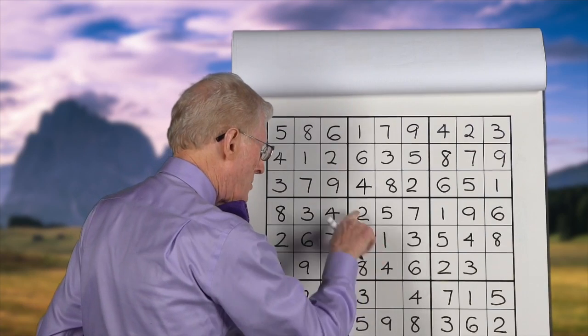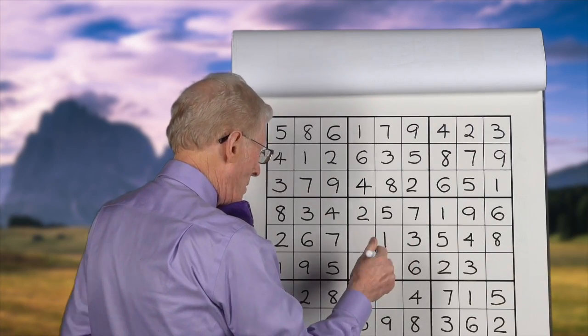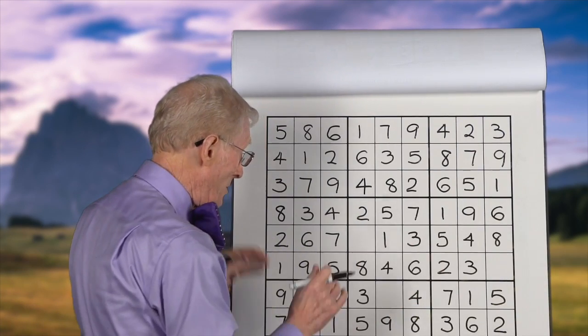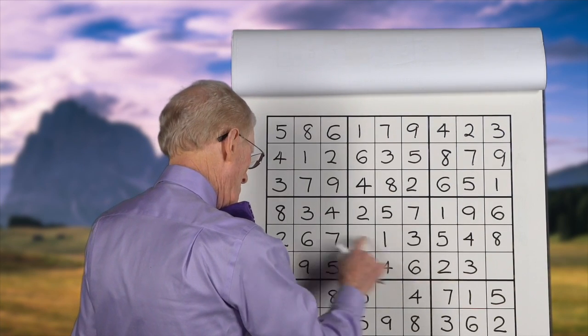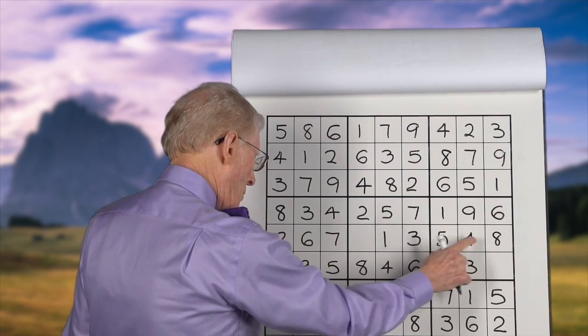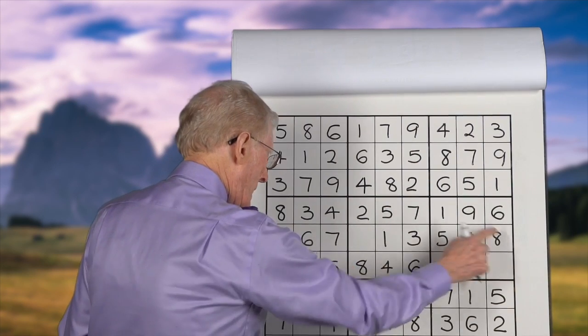So we do the same thing with this one now. We'll do the row first. We're supposed to be doing rows first in this particular case. 1, 2, 3, 4, 5, 6, 7, 8. It's a 9.